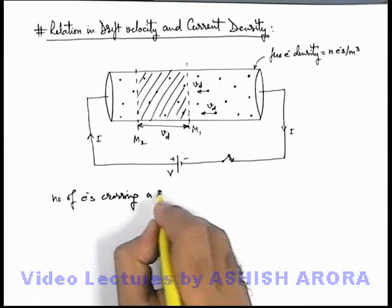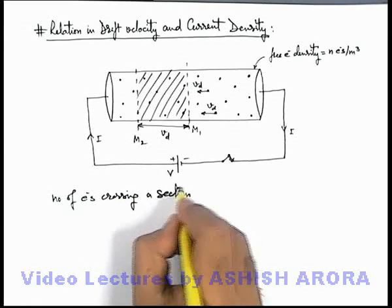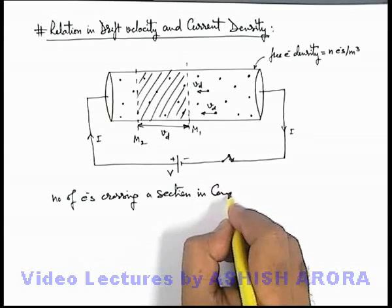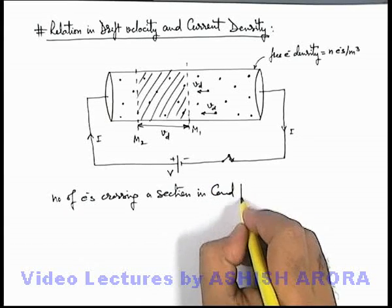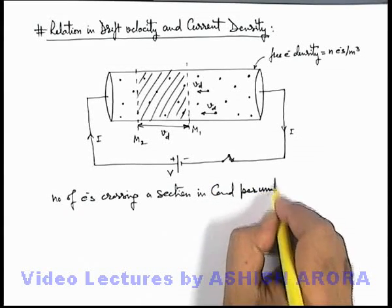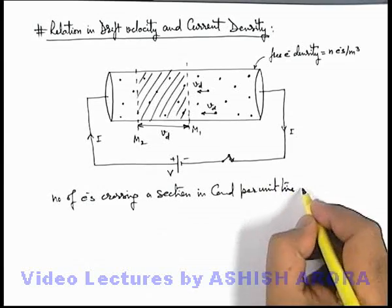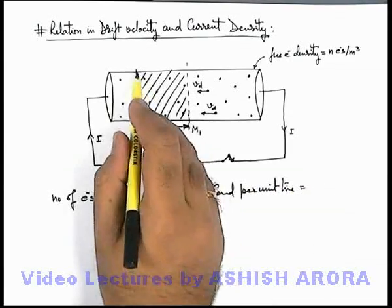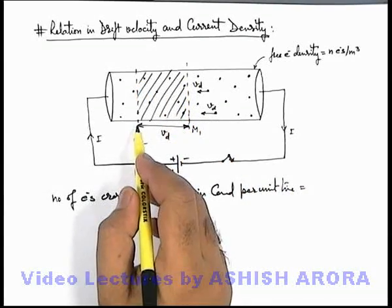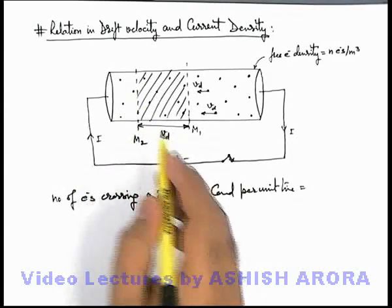Crossing a section in conductor per unit time are equal to the total volume of this region, which can be written as the cross sectional area multiplied by the length vd.